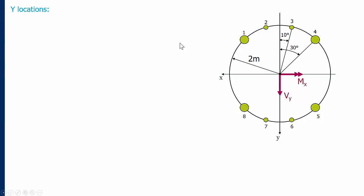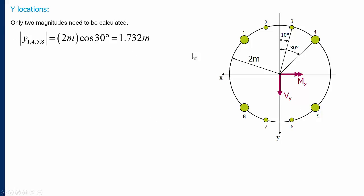Starting with the y-locations, here is our cross-section. We want the vertical distance from our centroid axis to each boom, and we only need to calculate two magnitudes. Booms 1, 4, 5, and 8 all have the same distance from the centroid. Booms 1 and 4 will have a negative y since y is positive downwards, while 8 and 5 will be positive. The distance for booms 1, 4, 5, and 8 is the radius times cosine of 30°, which gives 1.732 meters.